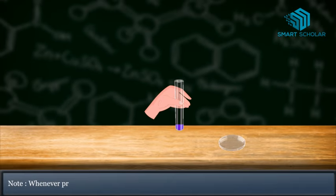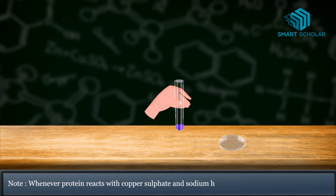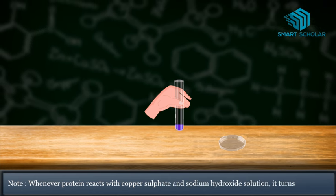Whenever protein reacts with copper sulfate and sodium hydroxide solution, it turns purple.